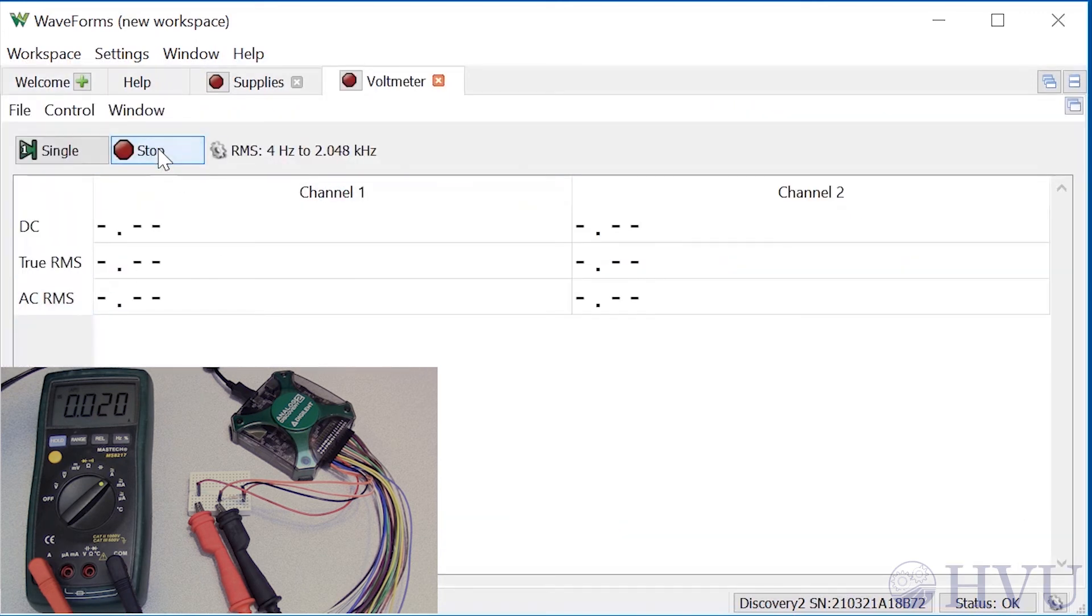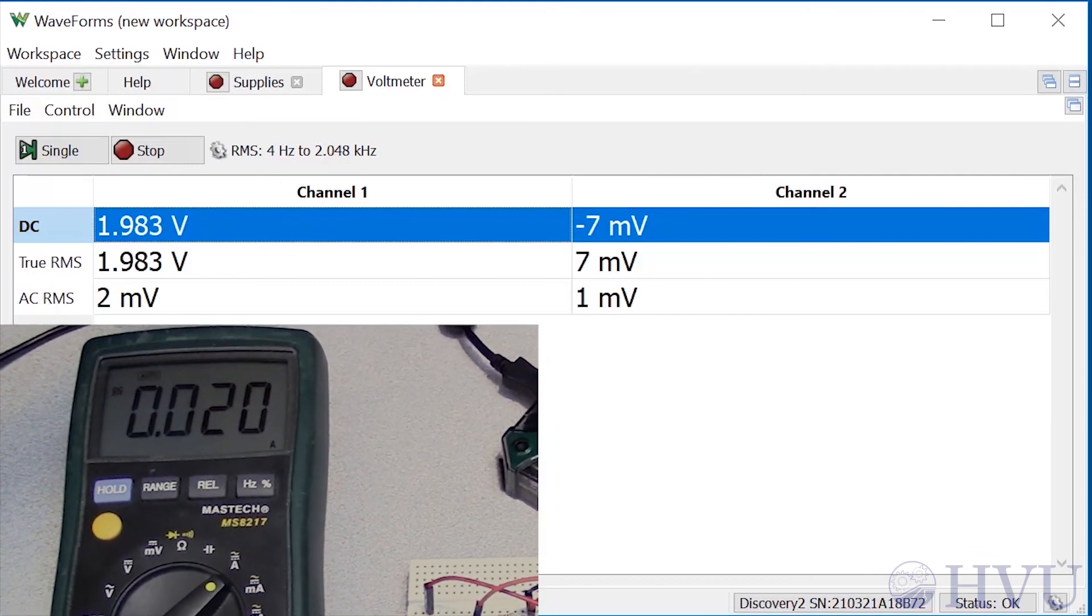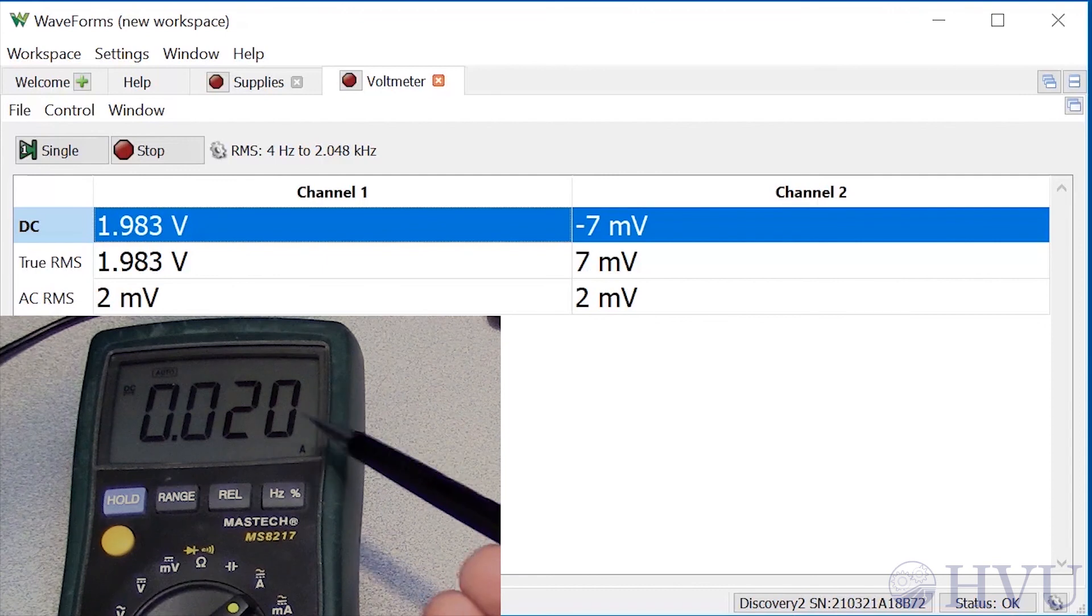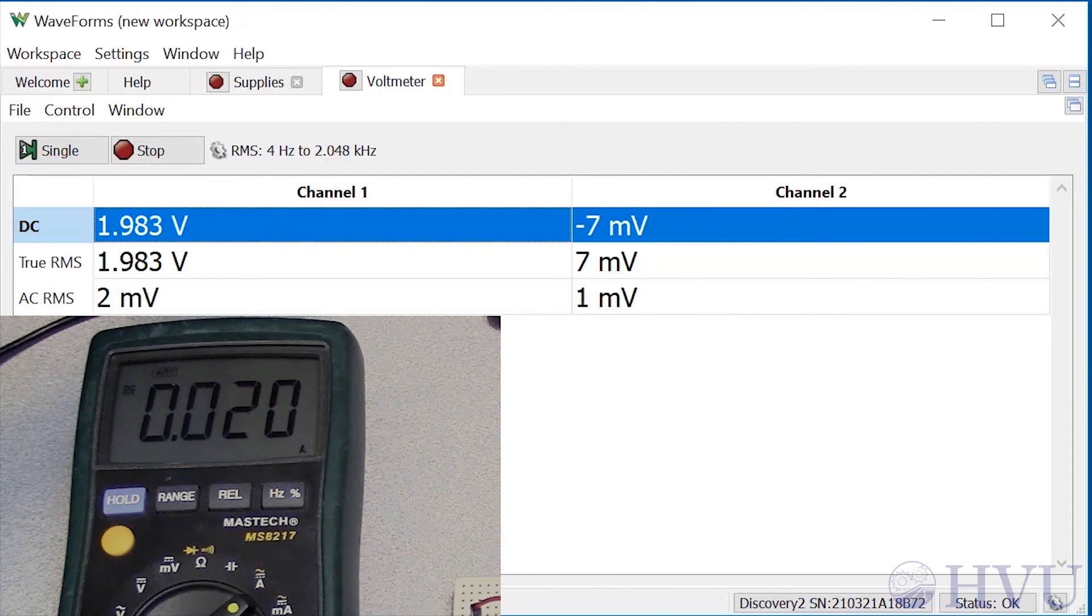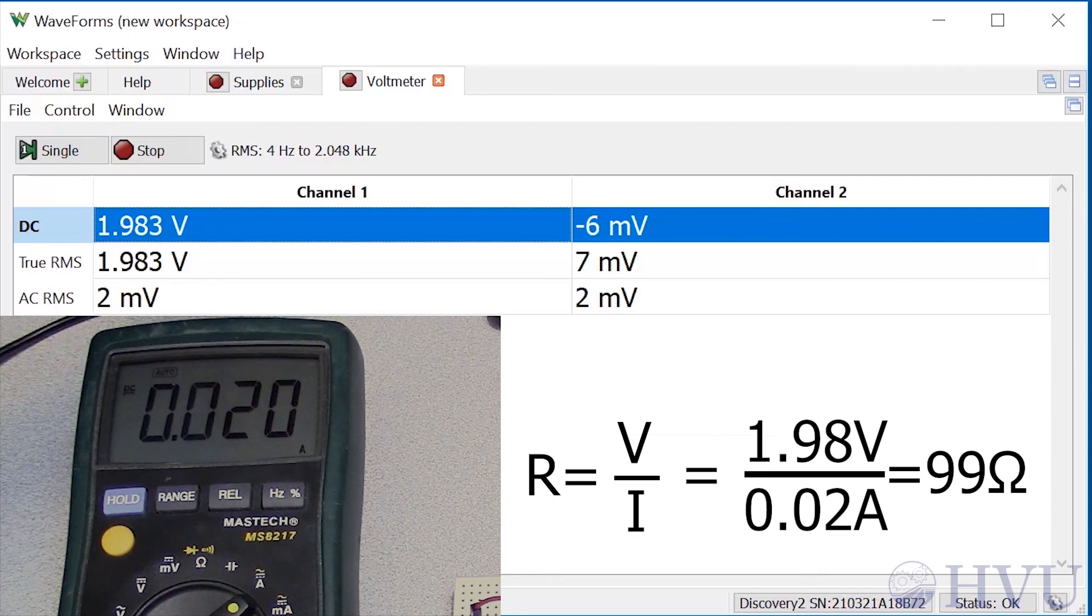The voltmeter instrument is under the voltmeter icon on the Welcome tab. If I click on run, I'll start measuring voltage. I want the DC levels. I've got 1.98 volts across the resistor. The ammeter is indicating that there's 0.02 amps. Resistance is voltage over current, which is 1.98 over 0.02, or about 99 ohms. This is extremely close to the nominal resistance of the resistor based on the color bands.